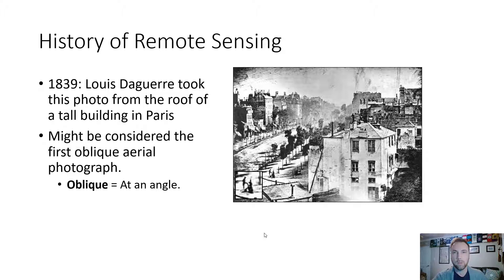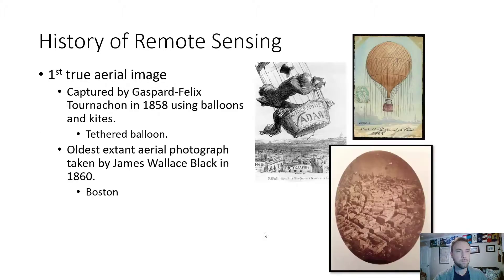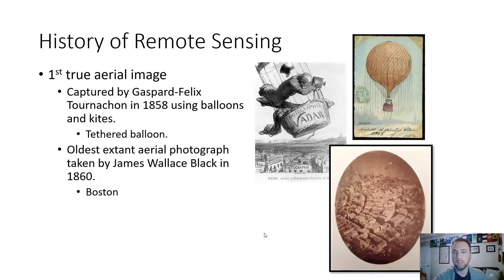The first true aerial image was captured by Gaspar Félix Tournachon in 1858 using balloons and kites tethered together, from which he took a photo. The oldest existing aerial photograph was taken by James Wallace Black in 1860 of Boston, and that is the photo shown on the bottom right.